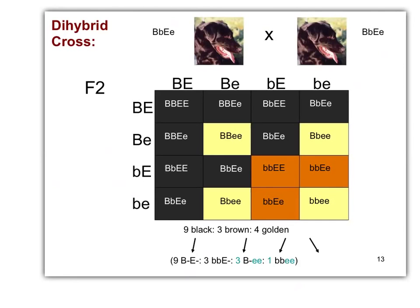Here's the Punnett square. The genotypes don't change — it's exactly what we'd do for a regular dihybrid. We get a 9-group with the double dominant, a 3-group with one recessive and at least one dominant of the other gene, another 3-group, and then the double recessive.